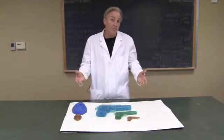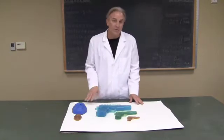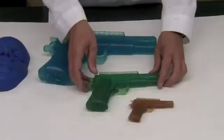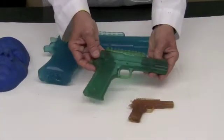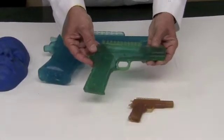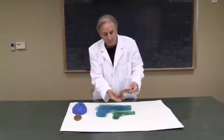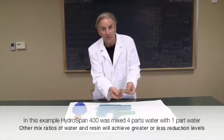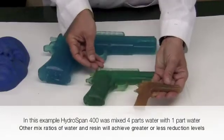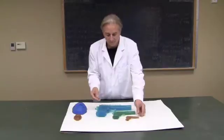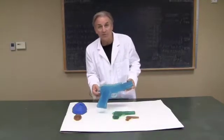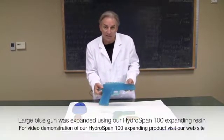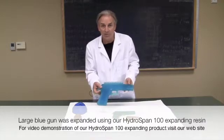To demonstrate the ability of the HydroSpan family of products, we've recreated an object—in this case, a 9mm handgun. The green is actually the size of the original handgun. This brown color is HydroSpan 400 that has been shrunk using four parts water to one part HydroSpan resin. This part was made with HydroSpan 100, which we talked about in earlier videos, and this was expanded 60% larger than the original piece.